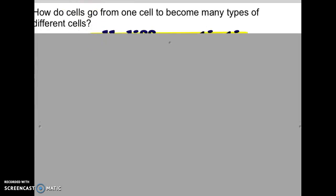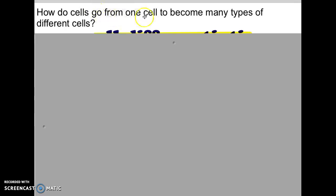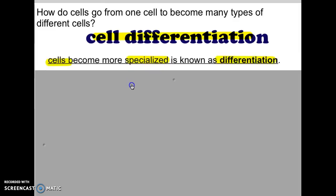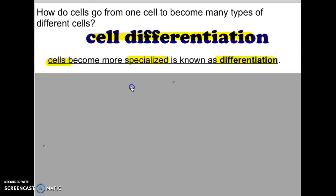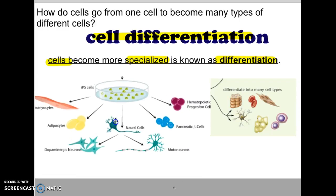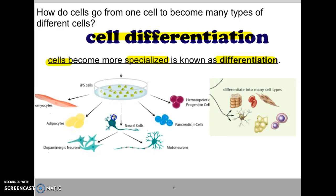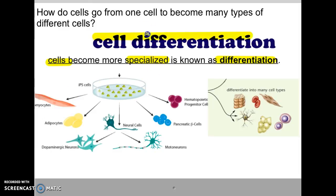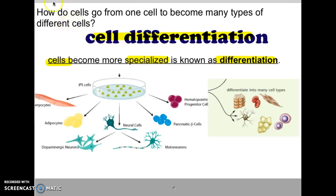The question is: how do these cells become specialized? How do they go from one single cell to all these different varieties of cells in our body? This process is called cell differentiation — it's basically when cells become more specialized. We get all different varieties of cells: skin cells, muscle cells, nerve cells, bone cells, lung cells, heart cells. They become differentiated when you are in utero.